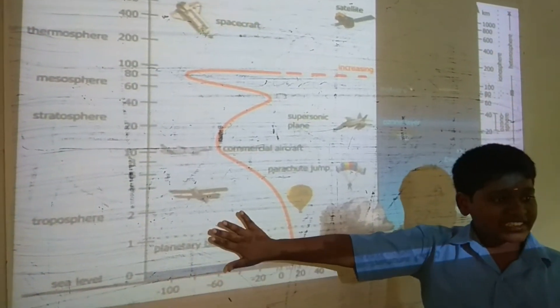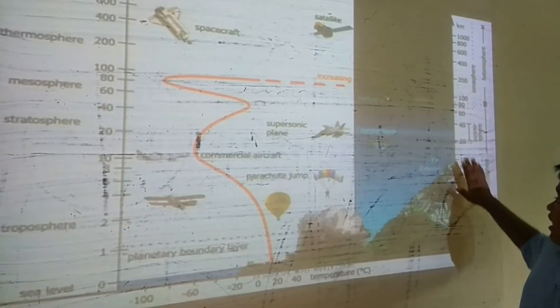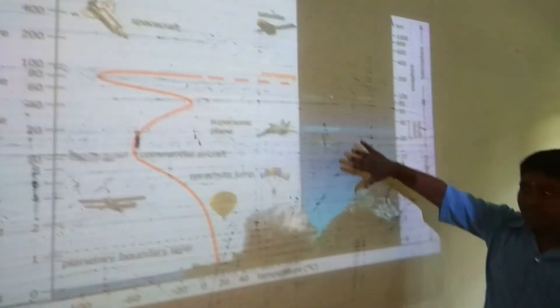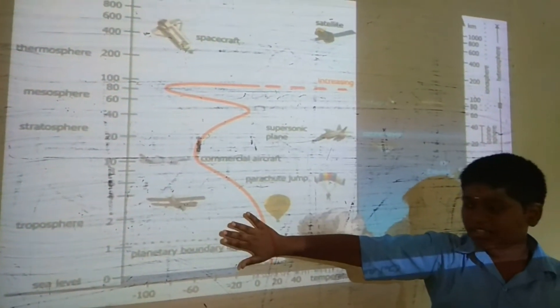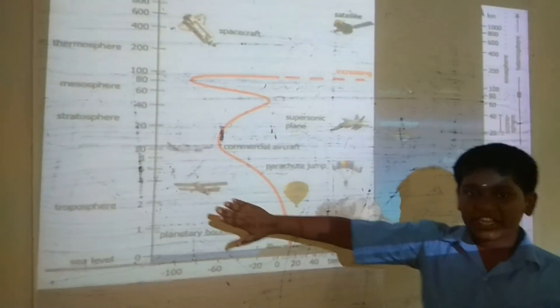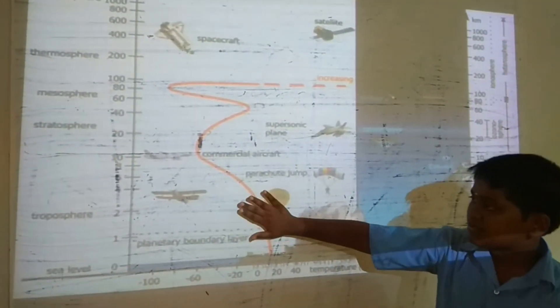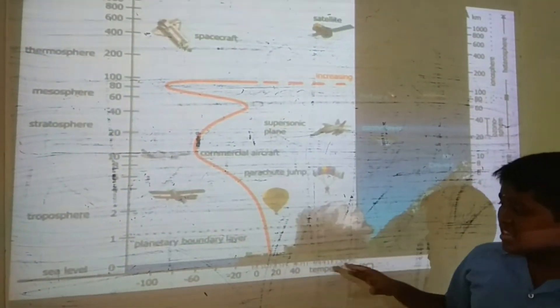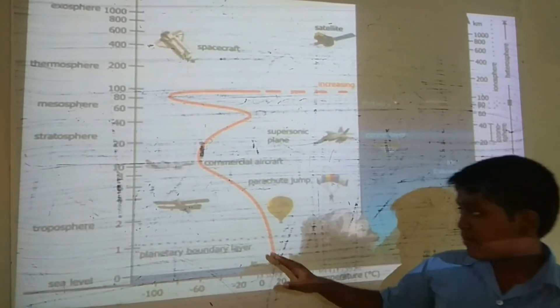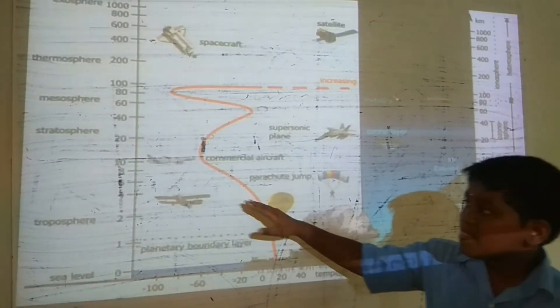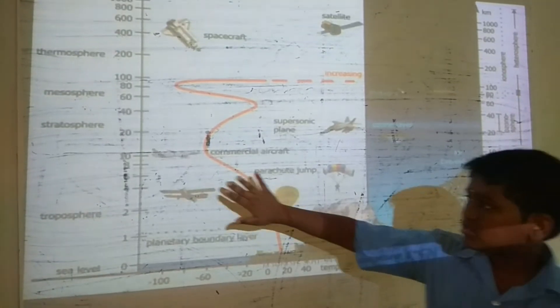In this sphere, the oxygen content is very high and Mount Everest is present. Precipitation takes place in this sphere. If we go up, the temperature decreases. That's it about the Troposphere.